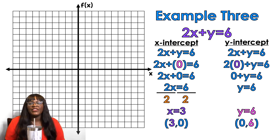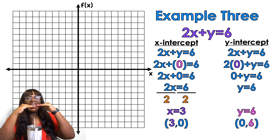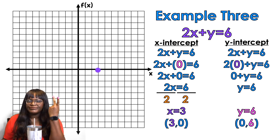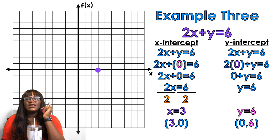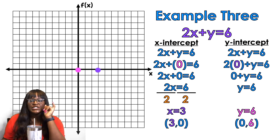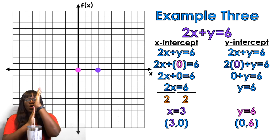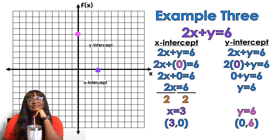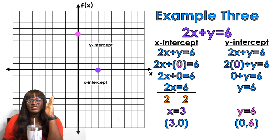Now that I have both points, I'm going to graph them. Plotting the x-intercept first — x-intercepts go on the x-axis — so starting from the origin I go over 3. Then the y-intercept goes on the y-axis, so I go up 6. Easy peasy lemon squeezy.